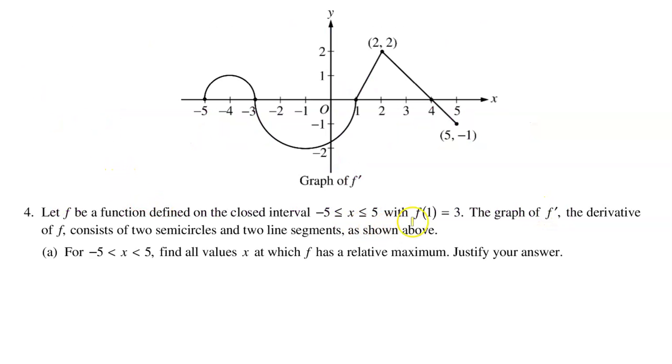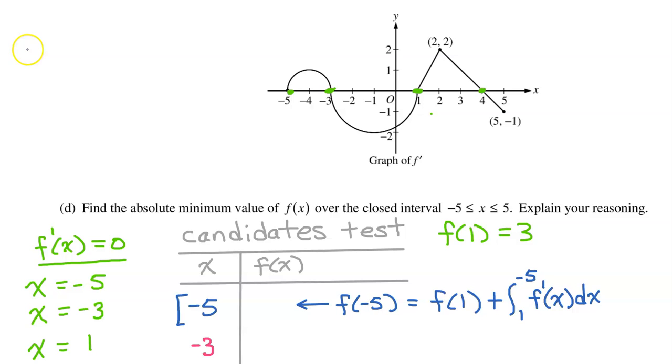In the setup of the problem, we were told that f at 1 is equal to 3. This is our initial value. According to the first fundamental theorem of calculus, the end value, f at negative 5, should equal the initial value, f at 1, plus the integral of f prime from 1 to negative 5. That will be the change in the value of f from 1 to negative 5. We know that f at 1 is 3, so we just need to calculate the integral of f prime from 1 to negative 5.